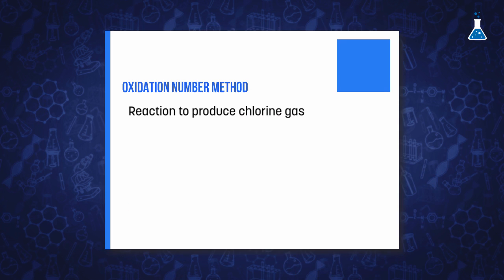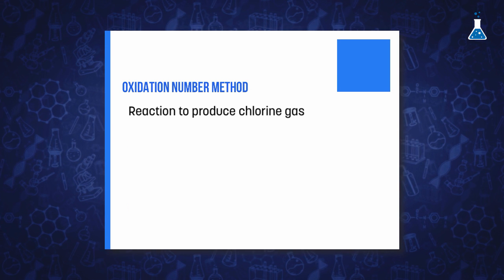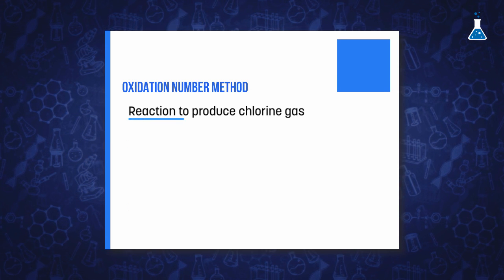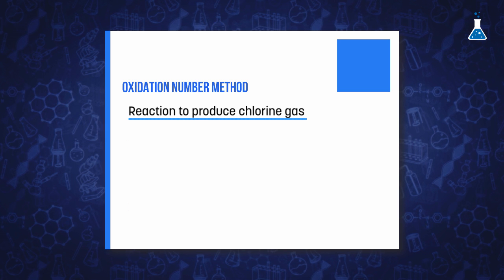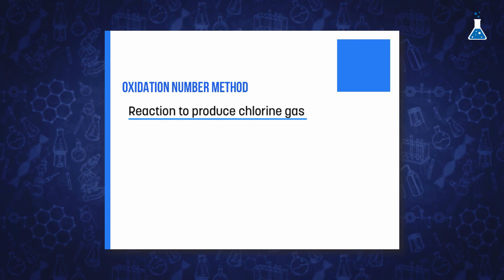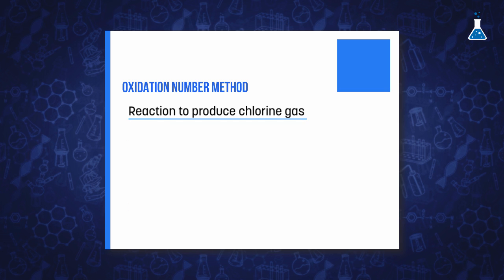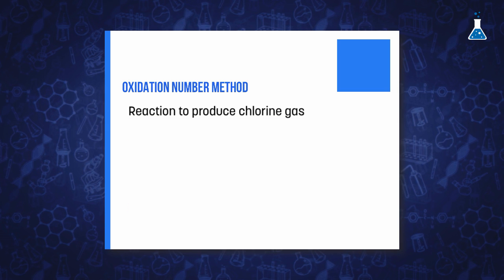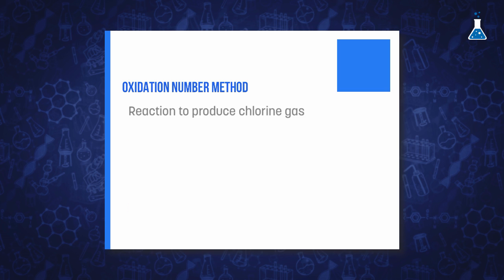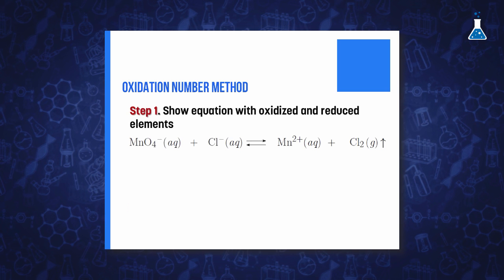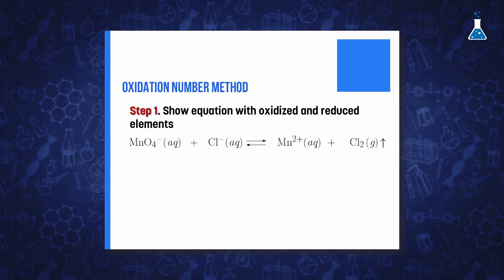For example, let's explore a case such as the reaction usually employed in a laboratory to produce chlorine gas. This is the reaction of potassium permanganate with hydrochloric acid in aqueous acid media. We can show the following preliminary equation for this reaction.